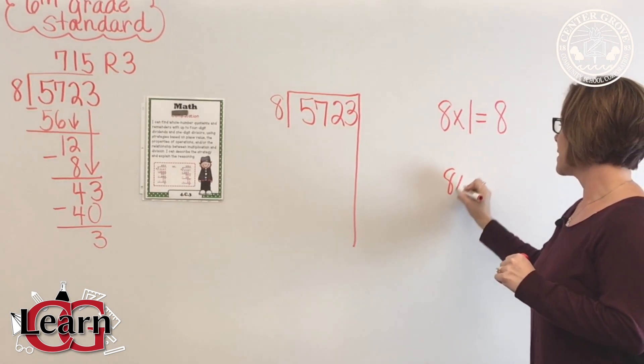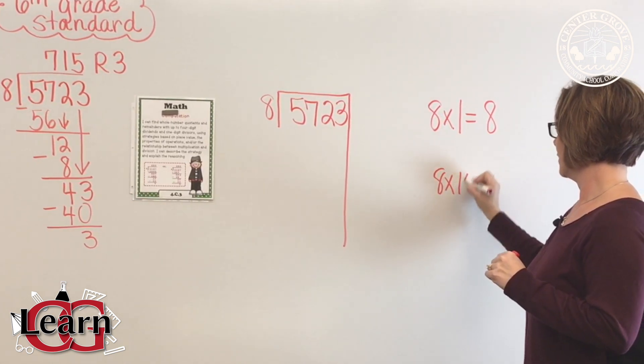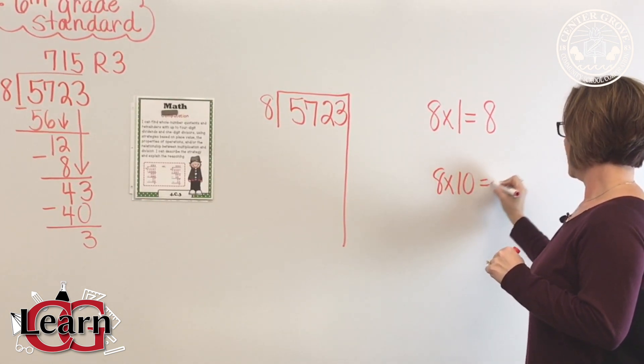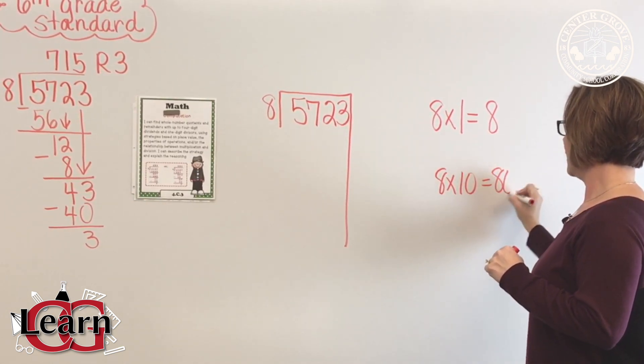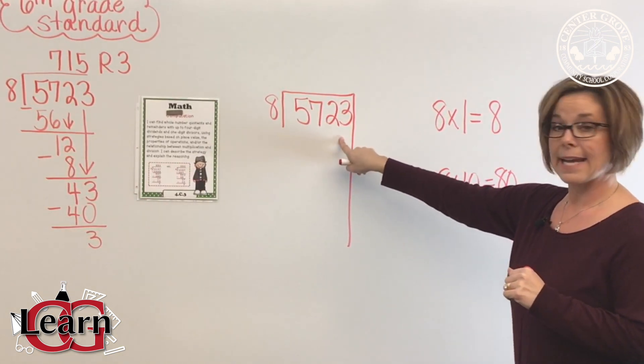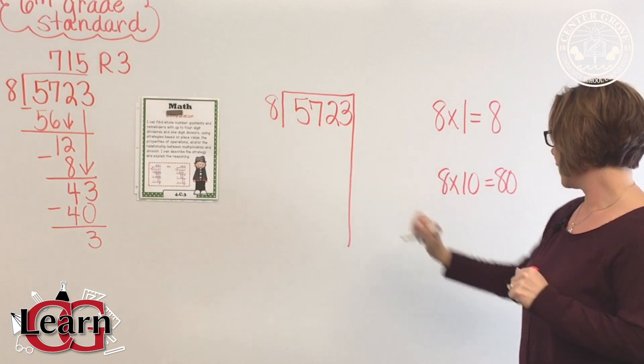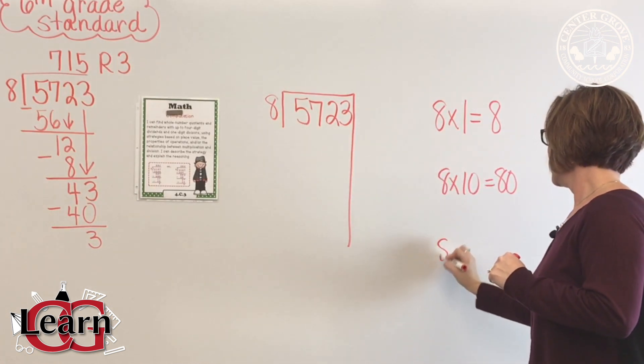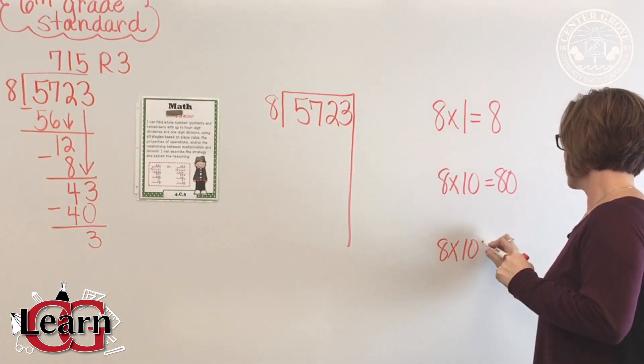8 times 10 is 80. I can still take out more than 80, so I'll go to 8 times 100.